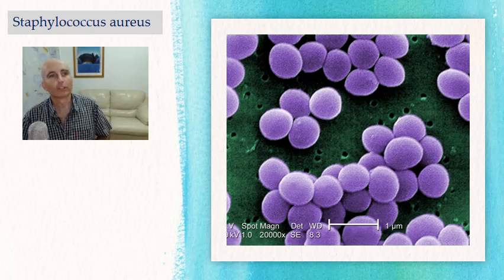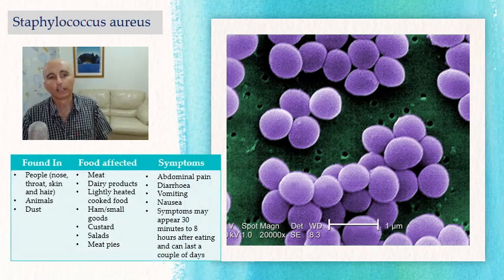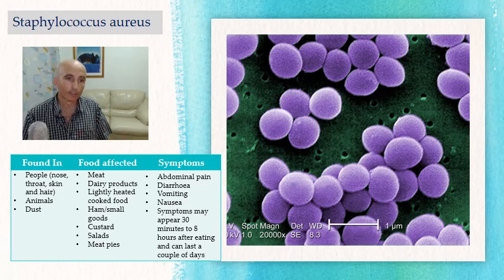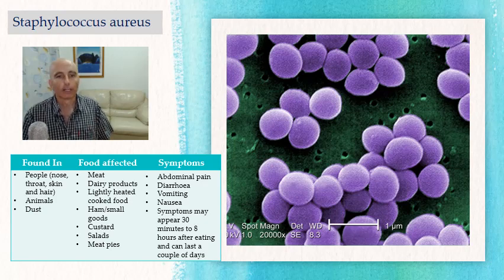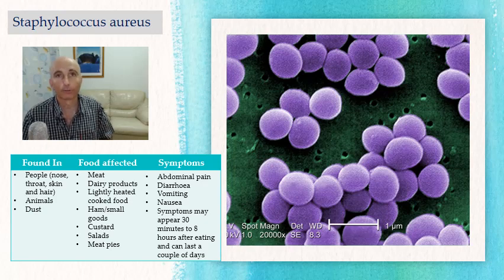Next is the well-known Staphylococcus aureus, or staph poisoning. It's found in the nose, hair, throat, skin, animals, and dust. A lot of different foods can be affected: meat, dairy, cooked foods, and ham. Symptoms are similar to the others and vary, appearing between 30 minutes to eight hours — making it fast acting. Prevention: maintain high standards of personal hygiene, store food below five degrees, and heat food above 60 degrees.